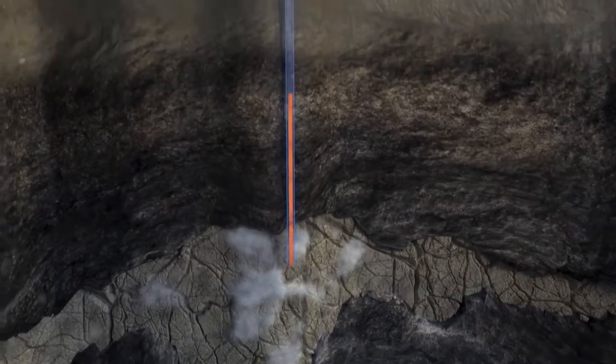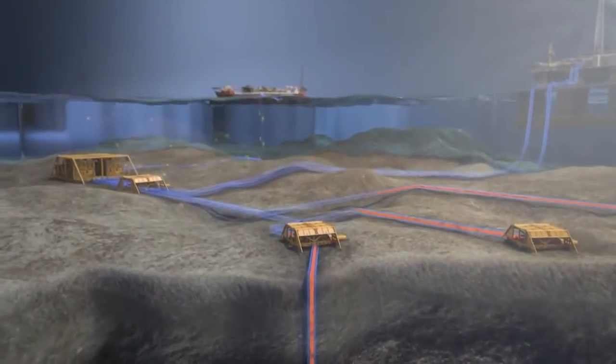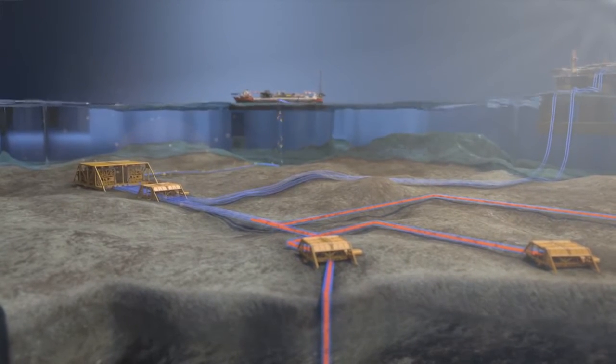As gas is taken out of the reservoir two and a half thousand meters below the seabed, the pressure decreases and the flow crawls to a halt.